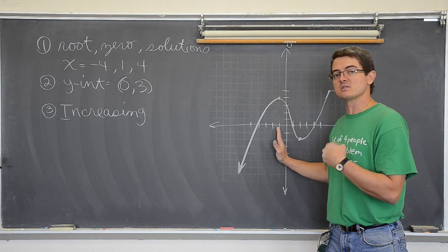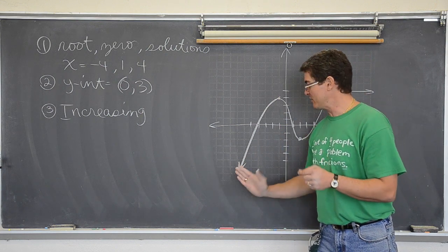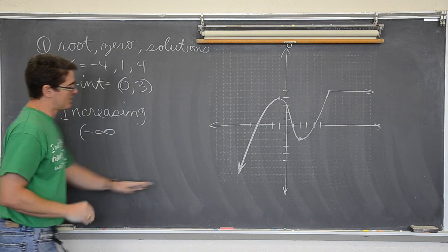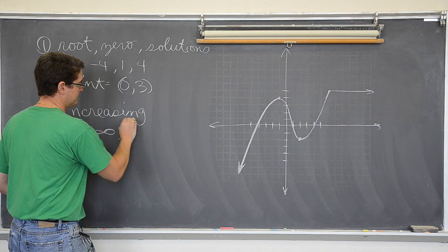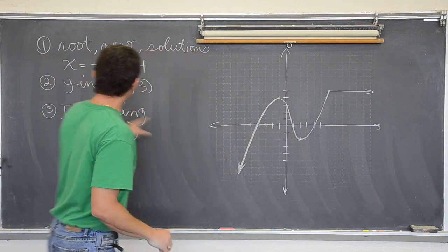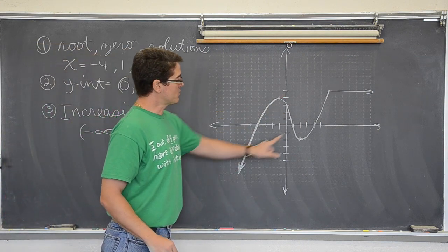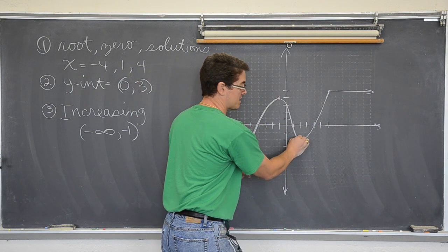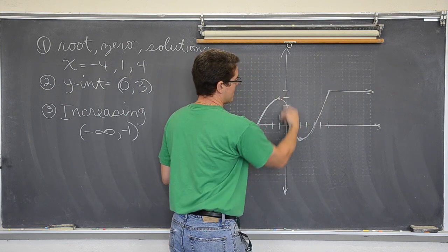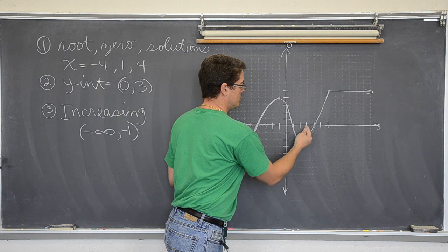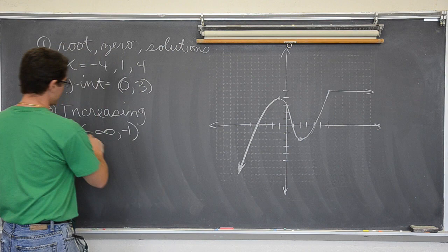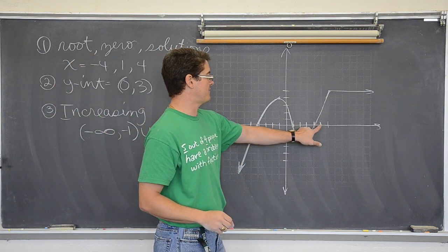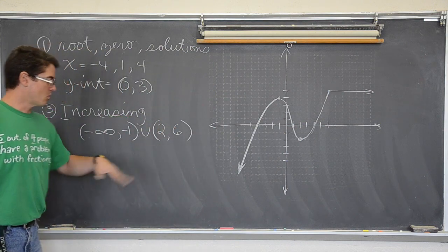I am going to write my answers in interval notation since I am enforcing that in my pre-calculus class. But it is increasing until you get to an x value of negative one. So it is increasing from negative infinity, that is all these negative numbers going to the left forever, up until you get to negative one. Then it stops increasing and starts to decrease. But I am increasing, and this is not the only place where the graph increases. It also increases from 2 to 6. This is along the x axis where you see the graph going up.